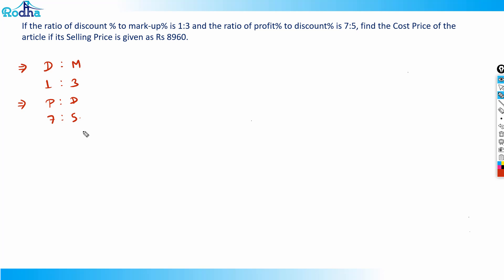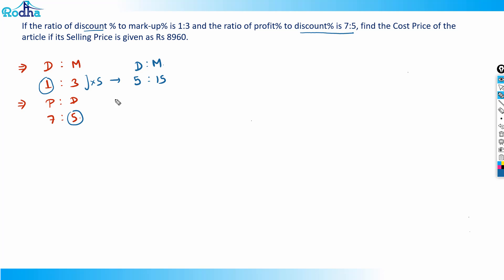Now, we have to work in ratios and we don't have a starting point. Notice that discount appears in both ratios — as 1 in the first ratio and as 5 in the second. The discount percentage should be the same in both, so we multiply the first ratio by 5 to make it consistent: discount to markup percentage becomes 5:15.